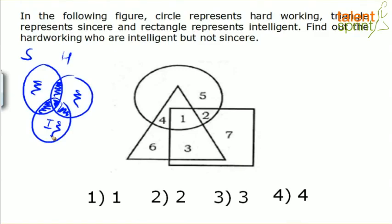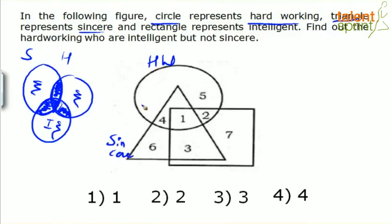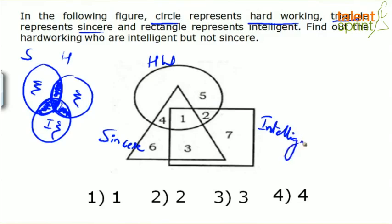We know how to identify what each region represents. For example, one leaf shows sincere and hardworking; another shows hardworking and intelligent; another shows sincere and intelligent; and the center shows all three. But in this question, every object is represented using a different geometrical shape instead of all circles. Circle is hardworking, triangle is sincere, and rectangle is intelligent.